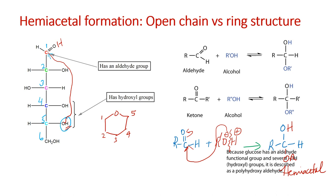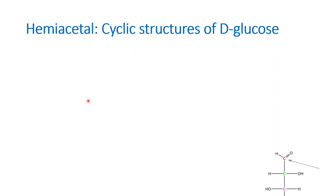Because carbons 1 through 5 are in the ring and oxygen bridges between them, this is a six-membered ring system — with the sixth carbon (CH₂OH) remaining outside. Because this is a cyclic six-membered ring resembling pyran, in carbohydrate chemistry these are given the name pyranose. If there is a six-membered ring, the ring system is called pyranose. Let us now see the cyclic structure of glucose.